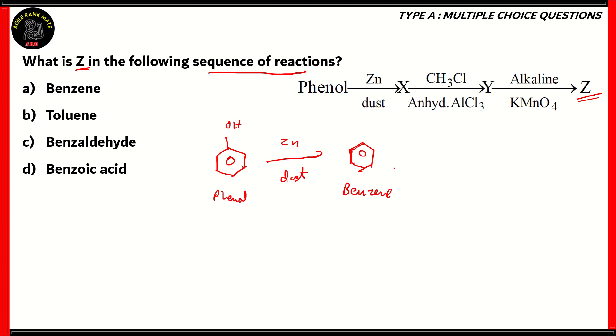Next, benzene when it reacts with CH3Cl, methyl chloride, in the presence of anhydrous aluminum chloride. When benzene reacts with a haloalkane in the presence of anhydrous aluminum chloride, a methyl group is added to benzene.